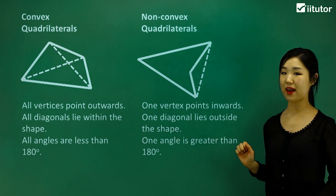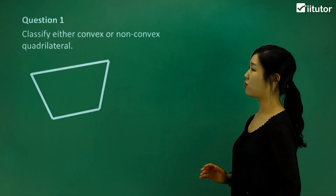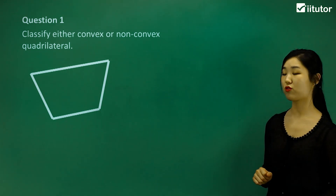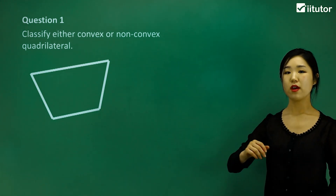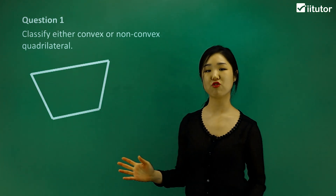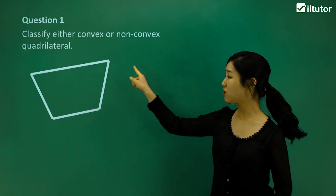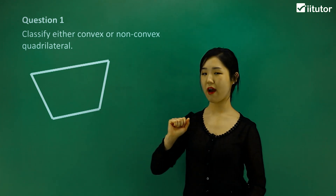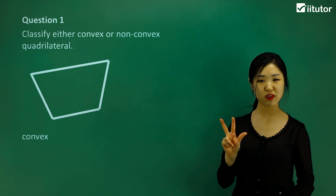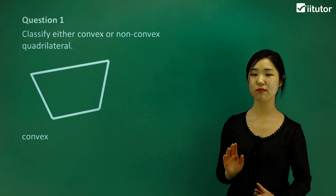Keeping these properties in mind, let's identify which are convex and which are non-convex. Starting with question one, all the angles are obtuse or acute — they're all less than 180 degrees. You can see that all the vertices are pointing in an outwards direction, and if you draw the diagonals, they're all inside the shape. So this one must be convex. It satisfies all three key features of a convex quadrilateral.